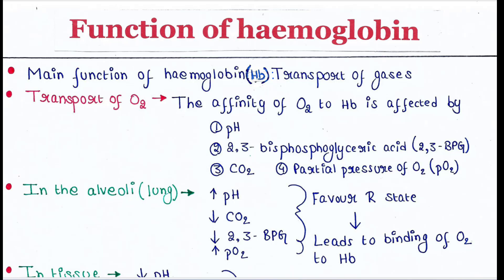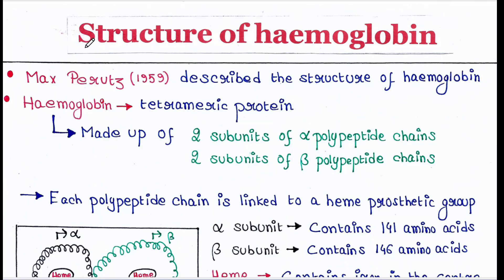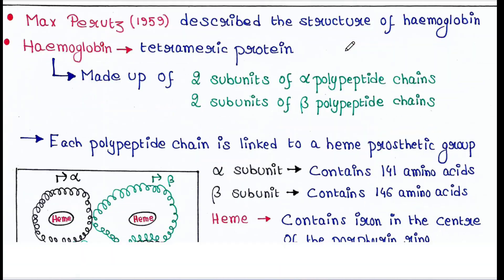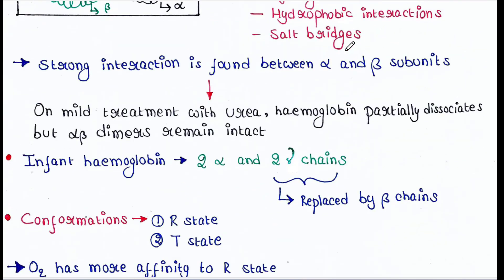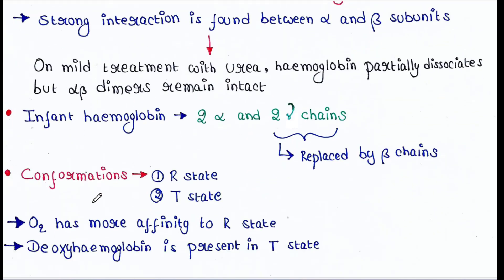In our last lecture we talked about the structure of hemoglobin, and we saw that hemoglobin has two conformations: R state and T state. Oxygen has more affinity for the R state, and deoxyhemoglobin is present in the T state.